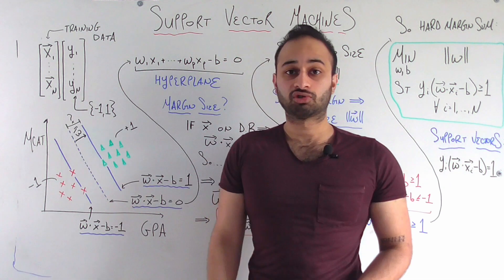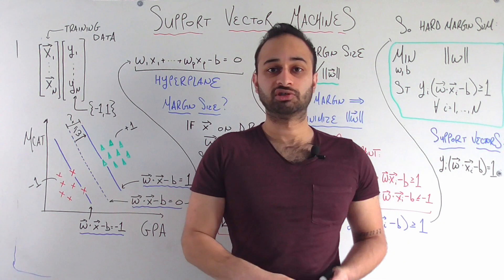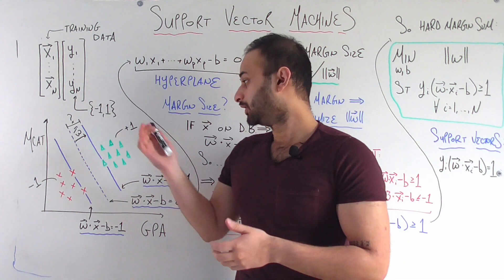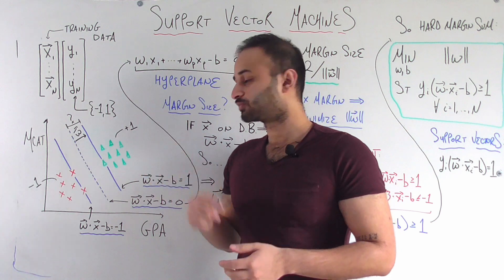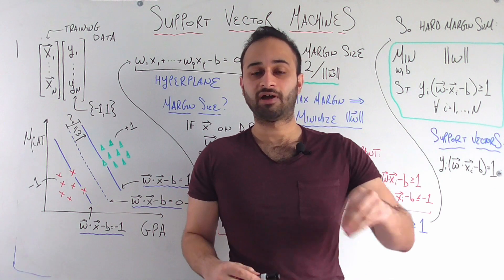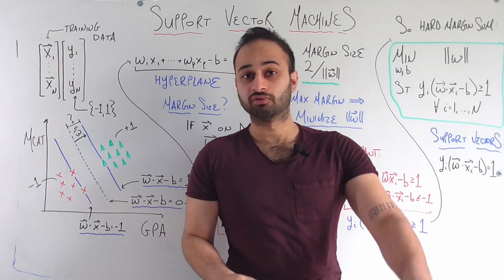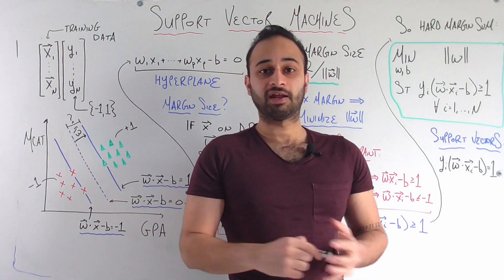We see that students who generally have higher GPAs and higher MCATs, who are these green triangles, are getting into their medical school. So these are classified as plus 1. And students with lower values for these metrics generally are not. So these are red x's classified as negative 1.